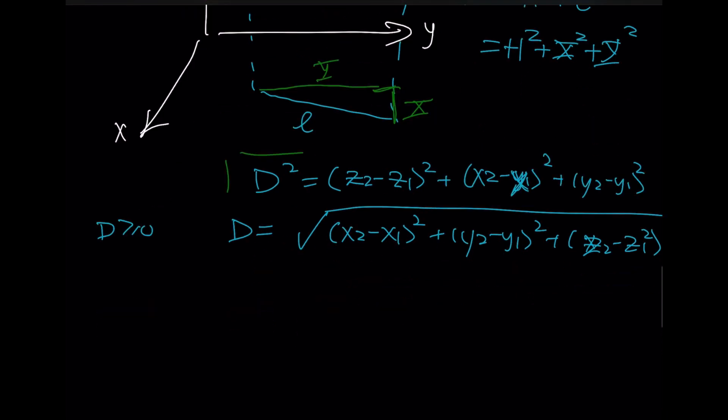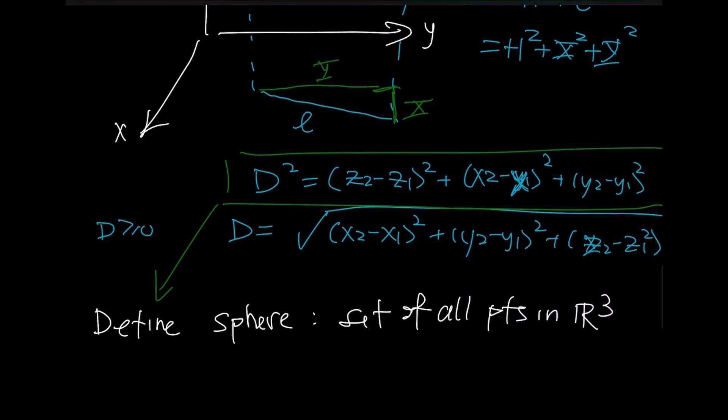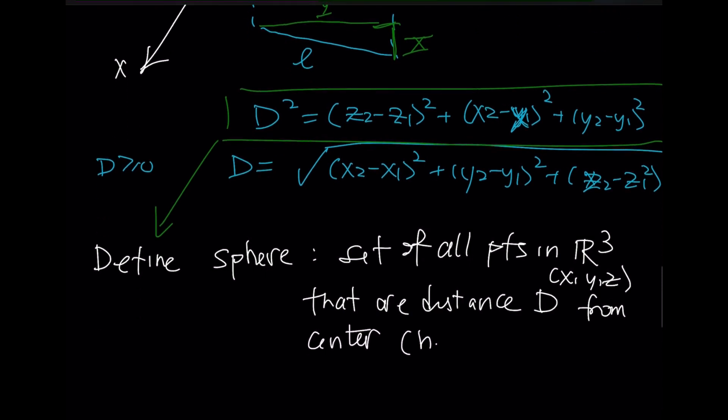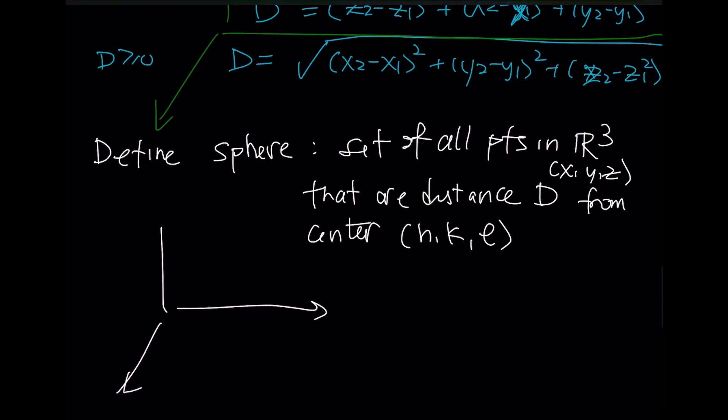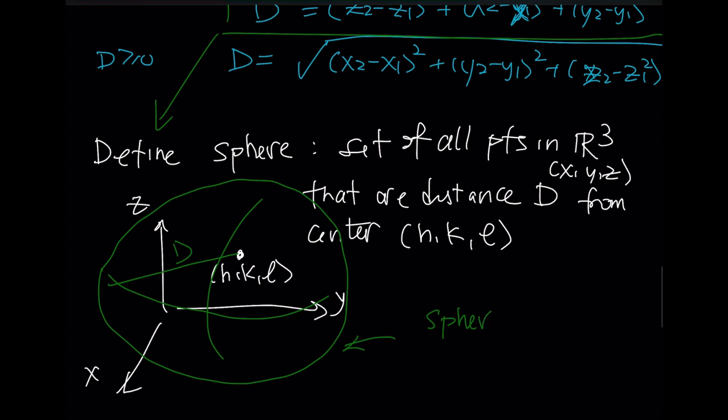This line up here tells us what we're interested in here. We're going to define the sphere as a set of all points in R3 and we'll call them X, Y, and Z that are a distance D from some sort of center and that'll be H, K, and L. If you were to draw your 3D axes you can pick some center H, K, and L you can draw some sort of distance and then what you've got is a new type of object and essentially this sphere is really the shell of the ball.